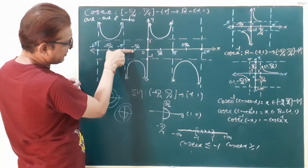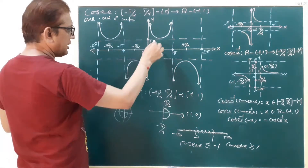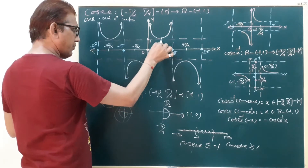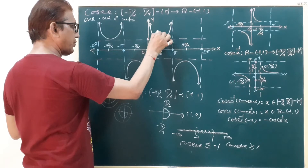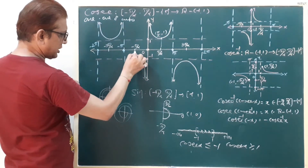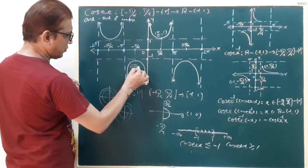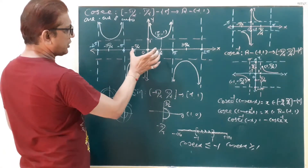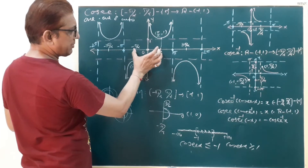In our domain, minus pi by 2 is on this portion and plus pi by 2 is here. At this point on the graph, the x-coordinate is pi by 2 and y-coordinate is 1, so this point is called (pi by 2, 1). And this point here is called (minus pi by 2, minus 1), which is in the third quadrant. So we draw only the area between minus pi by 2 to pi by 2.